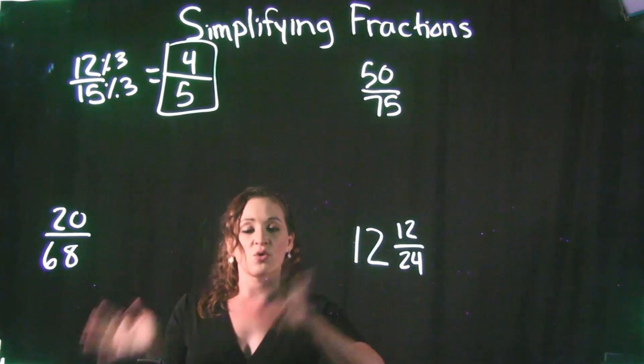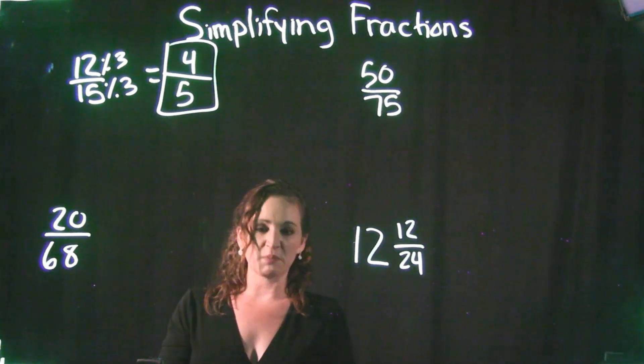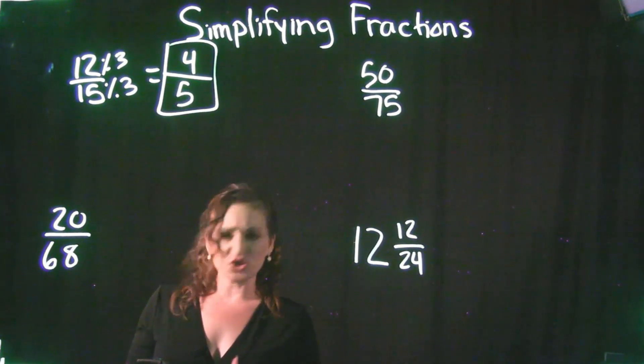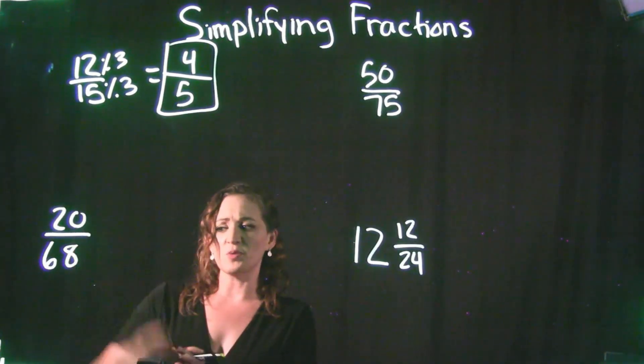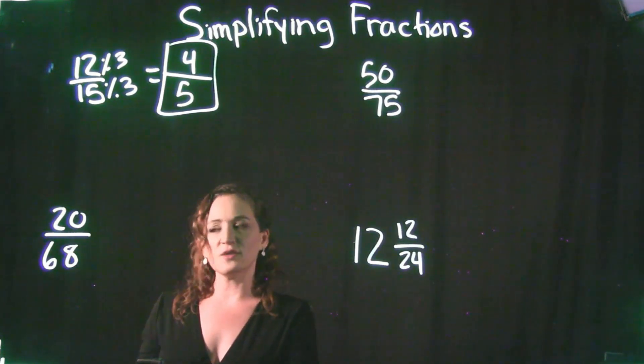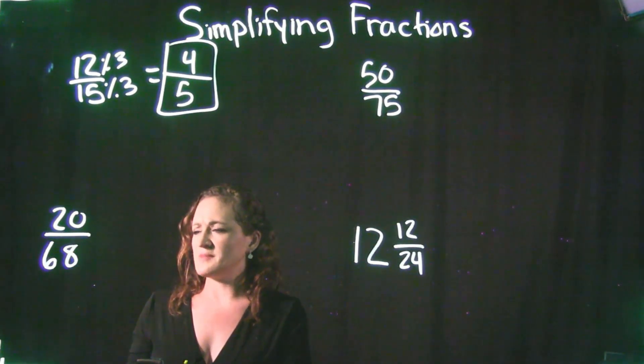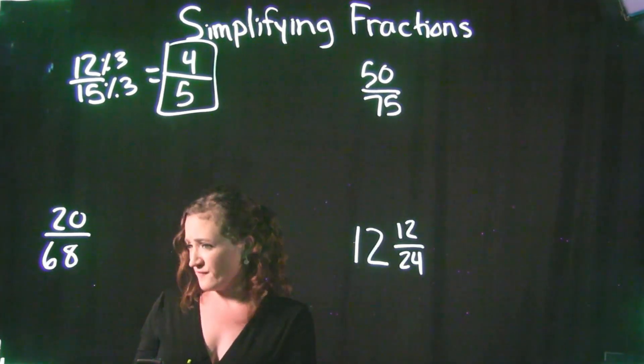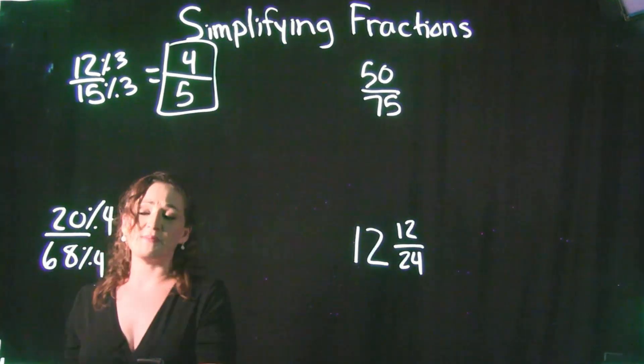We follow that same process in order to simplify fractions. So let's move down to this next example, 20 divided by 68. Now, by all means, whatever the first number that pops into your head, just go with that one. It is better if you can think of the biggest number that goes into both your numerator and denominator, but sometimes it's hard. So just pick the biggest number in your head that you can think of. For example, if I'm looking at 20 and 68, they're both even numbers, so I do know that a 2 does work. I'm pretty sure that a 4 would go into both of these as well. I'm going to start with a 4 and just see what happens there.